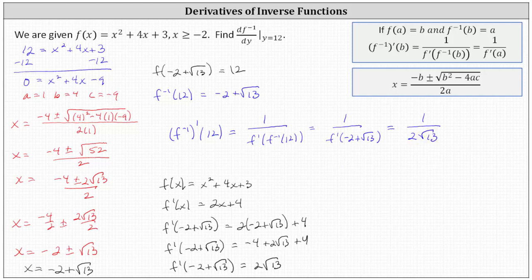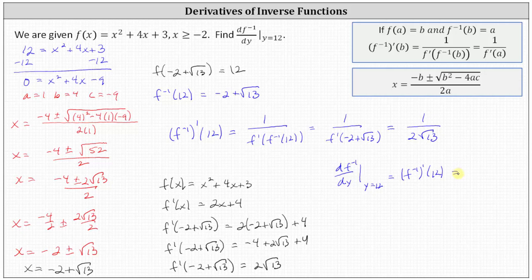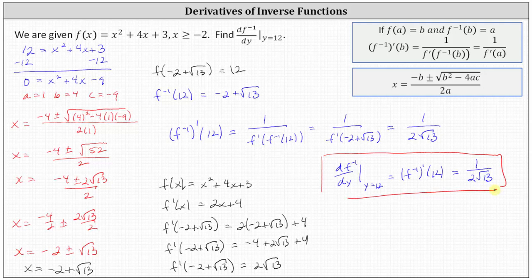Finally, we can determine df inverse dy at y equals 12. We have f inverse prime of 12, which equals one divided by f prime of negative two plus square root of 13, which we know is two square root of 13. So df inverse dy at y equals 12 equals one divided by two square root of 13. I hope you found this helpful.